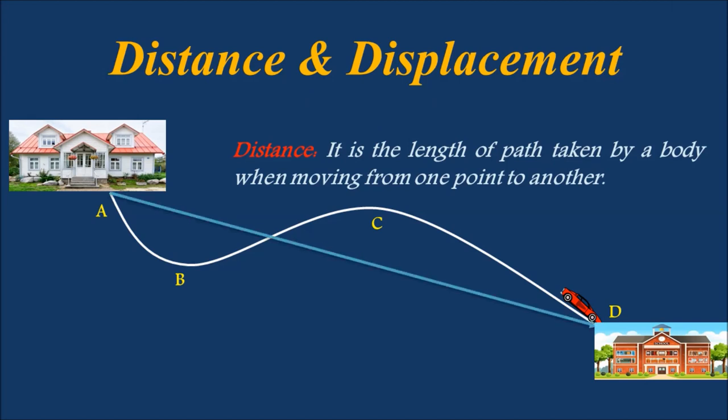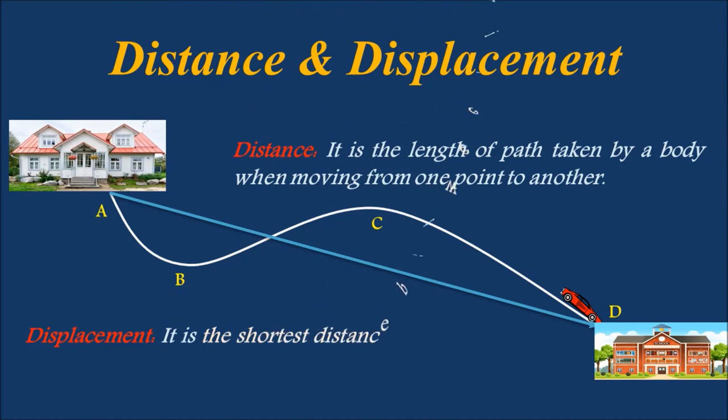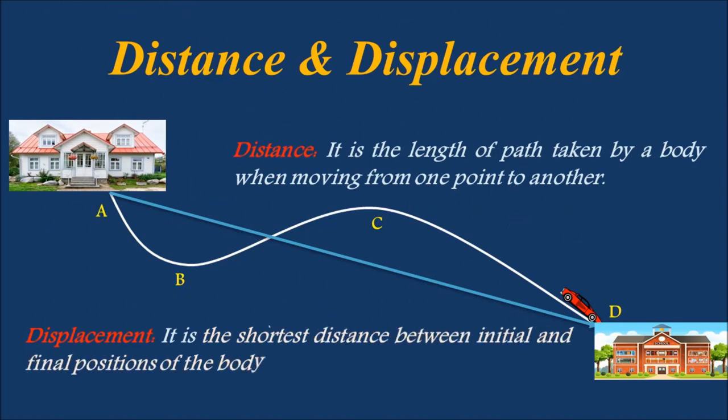The student can also go to school by taking the shortest path A, D, which is termed as displacement. Displacement is defined as the shortest distance between the initial and final positions of the body.